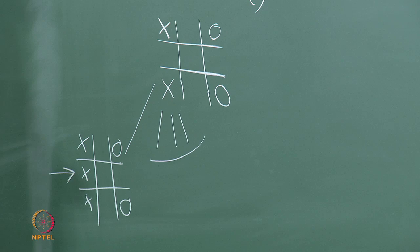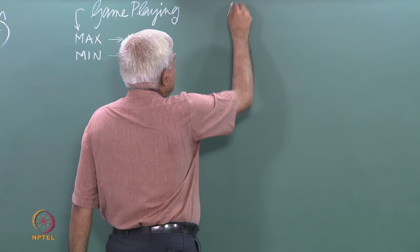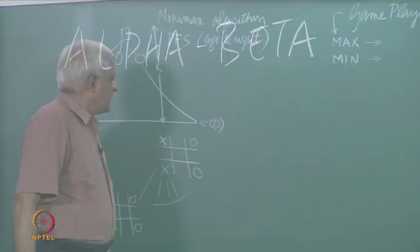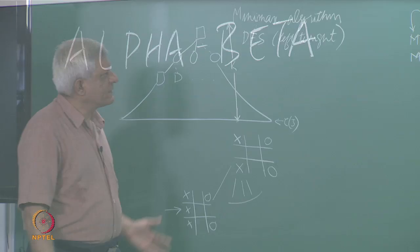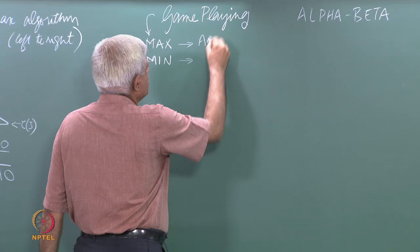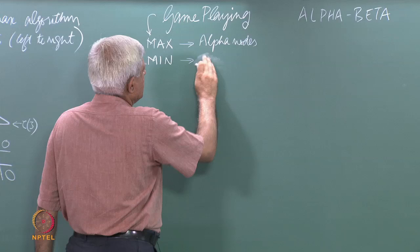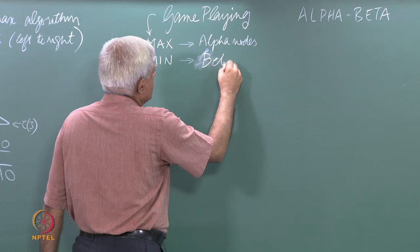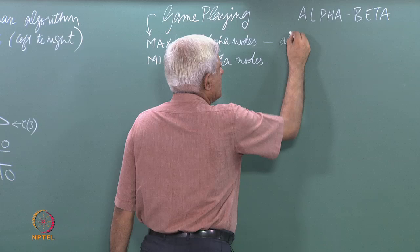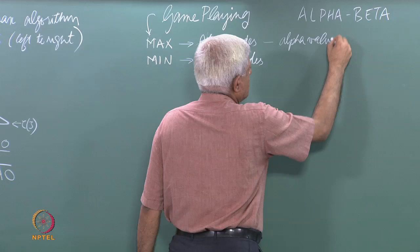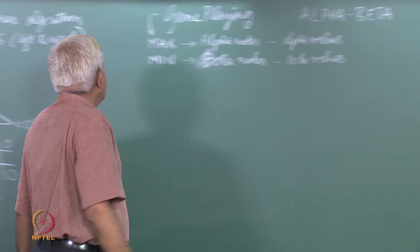The algorithm we want to look at today is called alpha-beta. A little bit of nomenclature before we continue: max nodes are also called alpha nodes and min nodes are also called beta nodes. Max nodes store alpha values and min nodes store beta values. These are the values of partially computed nodes.